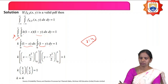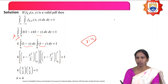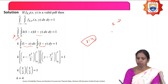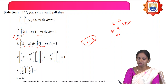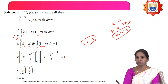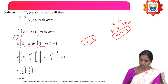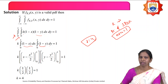Therefore, the value of k equals 4. In order to find the value of the constant k, we used the properties of the joint probability density function — specifically, the condition that the area under the density function equals 1, which is the condition for a proper density function.